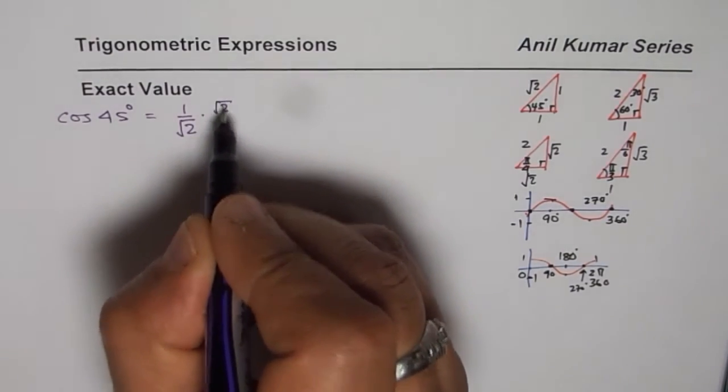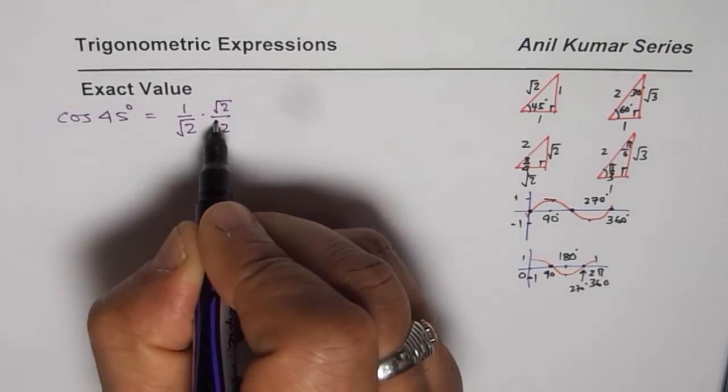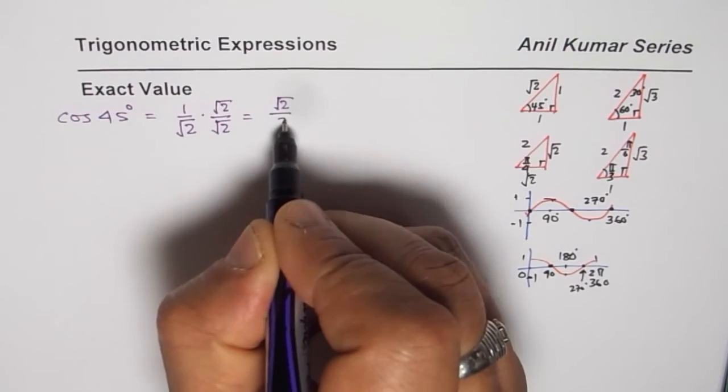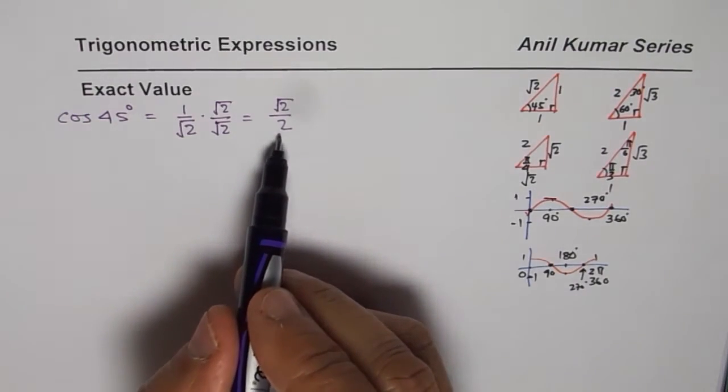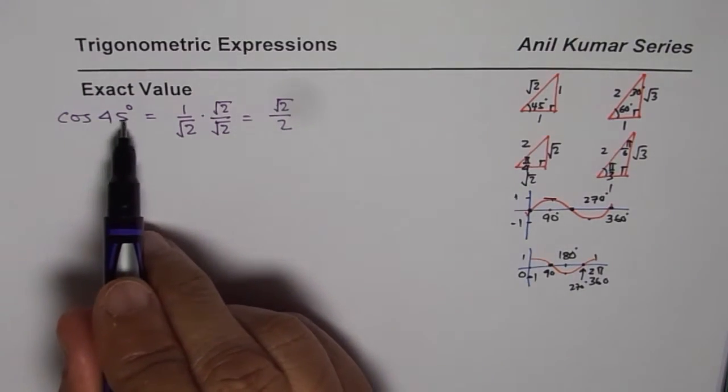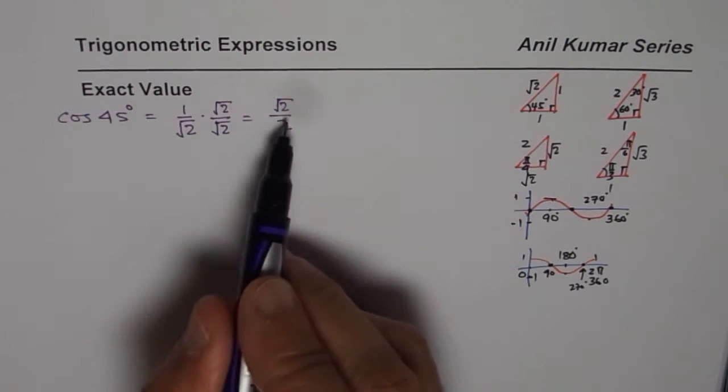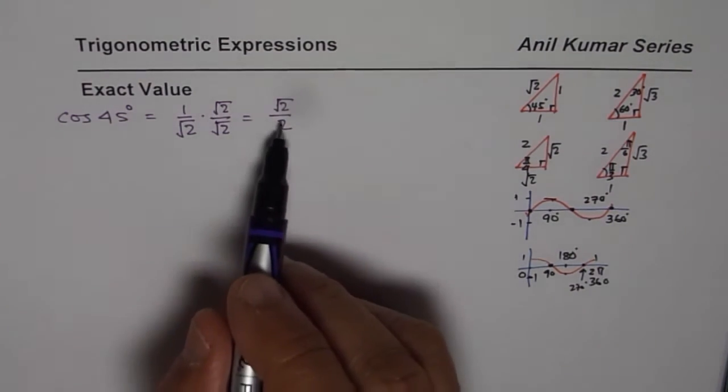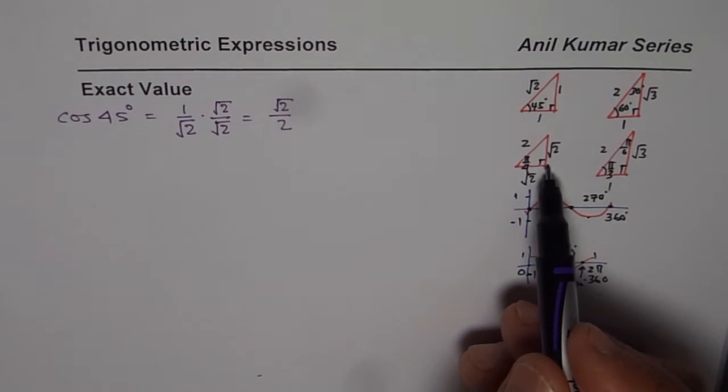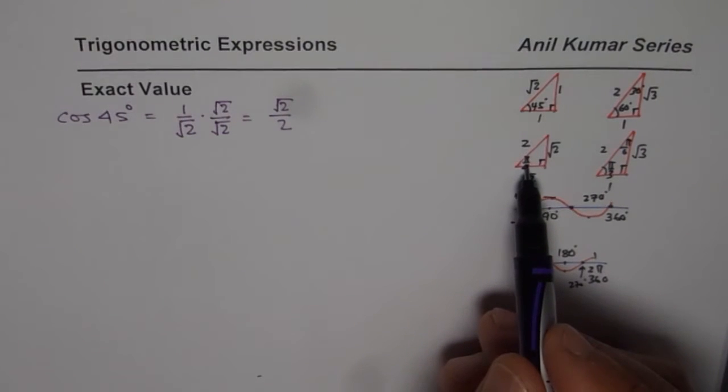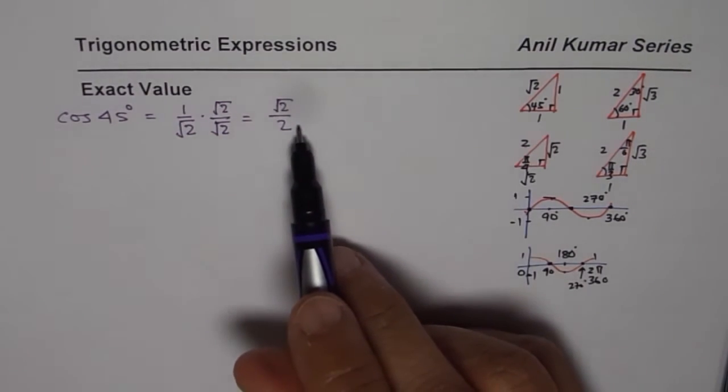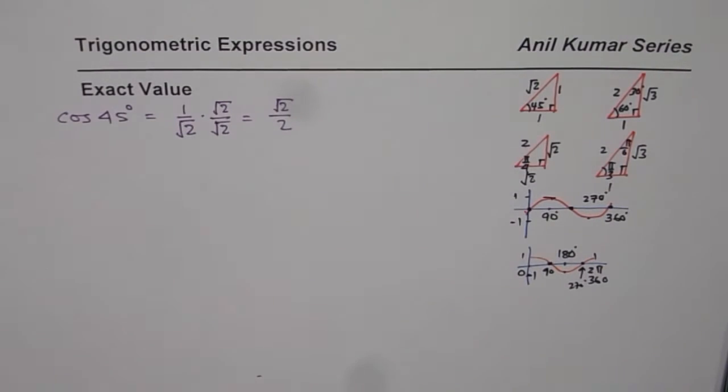If you get one like you got this time, you have to rationalize it. Rationalize means, in this case, we will multiply and divide by square root 2 and then you get your answer as square root 2 over 2. So, really speaking, exact value for cos of 45 degrees should be written as square root 2 over 2.